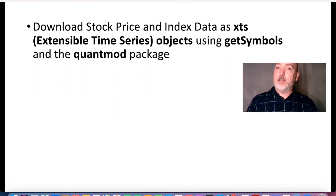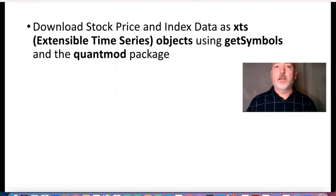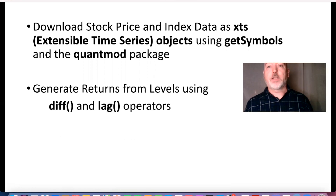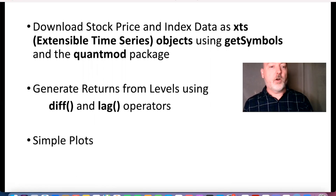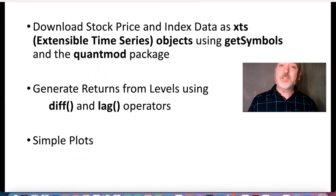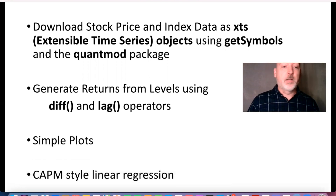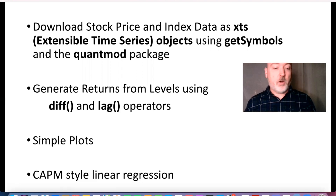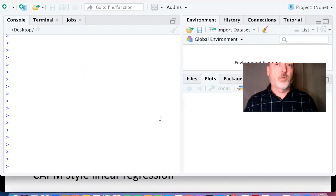As with everything in R, there are many ways to do things — we're just going to look at one basic way to obtain this financial data. Once we have the raw data, we'll take the levels of the asset prices and the index, generate returns using the difference and lag operators within R, create some simple plots to show how nice a time series plot looks with XTS objects, and then run a simple regression of the asset return as a function of the market return, mimicking a very simple capital asset pricing model regression.